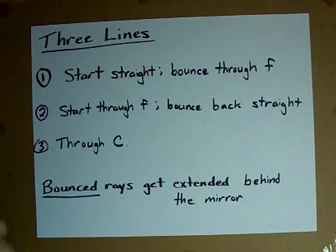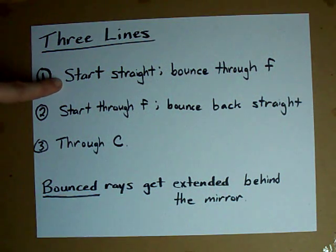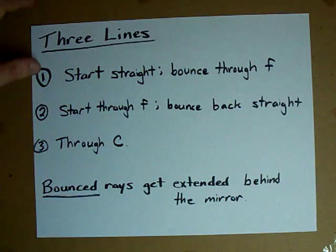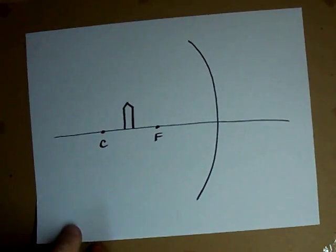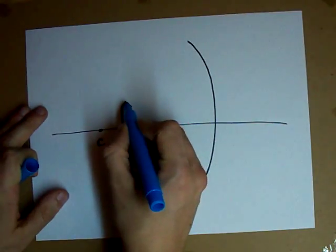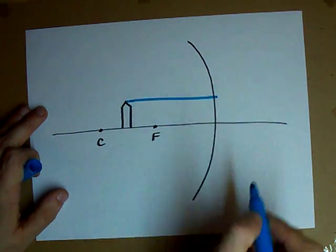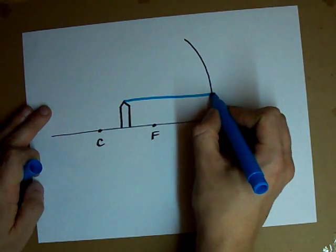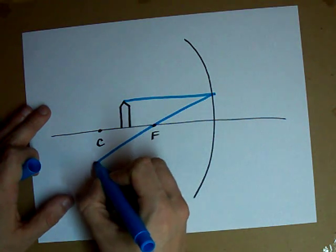Here, let's try this. Line number one, start out straight and then bounce through F. So what I'm going to do is I'm going to start at my pencil tip, start it out going straight, and I'm going to bounce off the mirror through F.